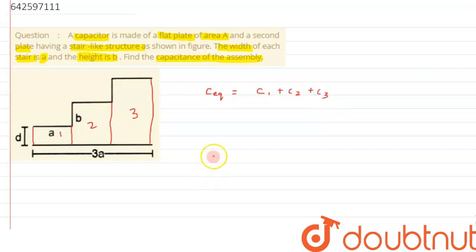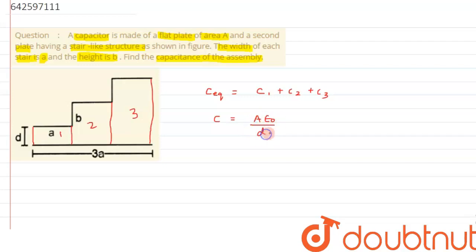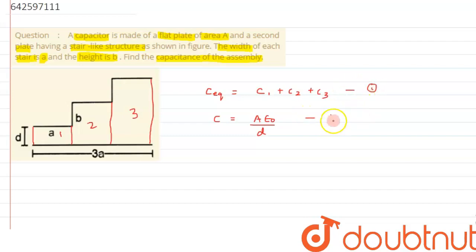Now we have to calculate C1, C2, and C3. The capacitance formula when there is no dielectric medium present is C = Aε₀/d, where A is the area and d is the separation between the two plates. We will use this equation to calculate C1, C2, and C3.